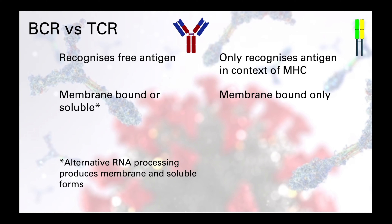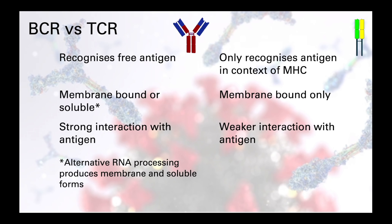The interaction between the receptors and their cognate antigen is different too, with the B cell receptor having a higher affinity for its antigen compared to the T cell receptor, which makes sense when you consider that the T cell receptor-MHC interaction is an on-off interaction over a period of between 12 and 24 hours.